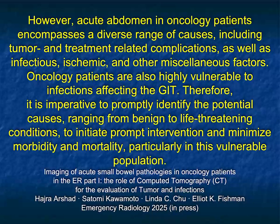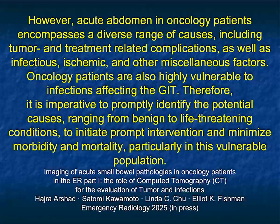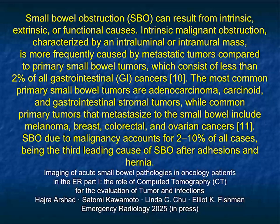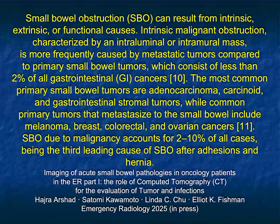We talk about the increased incidence of GI bleeding. CT is the study of choice to look for GI bleeding, but in a regular population it's most commonly due to a diverticulum or AV malformation, while in the oncology patient it could be due to the primary tumor or related to therapy. For small bowel obstruction, patients often have tumors — adenocarcinoma, carcinoids — and primary tumors or metastases from melanoma, breast, colorectal, or ovarian cancer can cause symptoms. Small bowel obstruction due to malignancy accounts for up to 10% of all cases, being the third leading cause after adhesions and hernia.